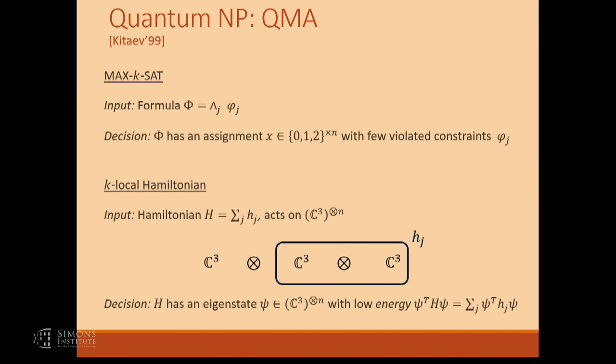What makes the problem difficult is that in general this matrix acts on a space of dimension 3 to the n — an exponentially large matrix. So you can solve this eigenvalue problem in exponential time. The point is that if you have a quantum computer, given the eigenstate that minimizes the energy, you can perform measurements on it corresponding to this Hamiltonian and estimate what energy it has.